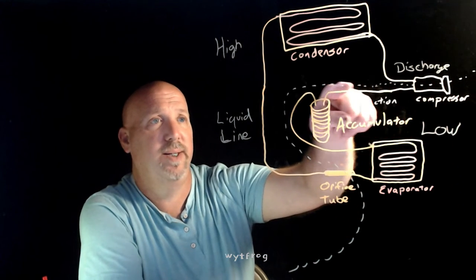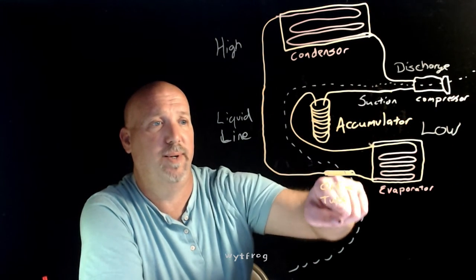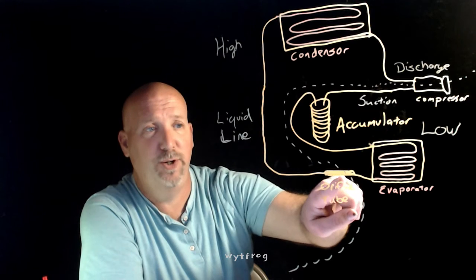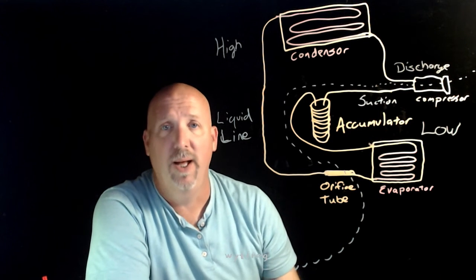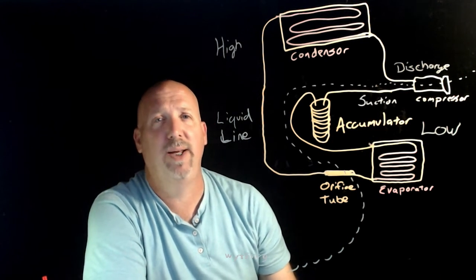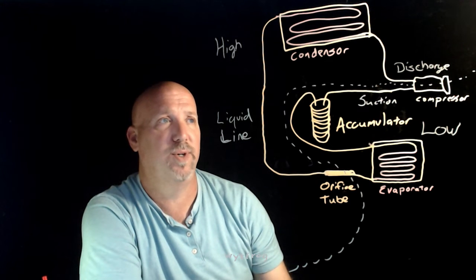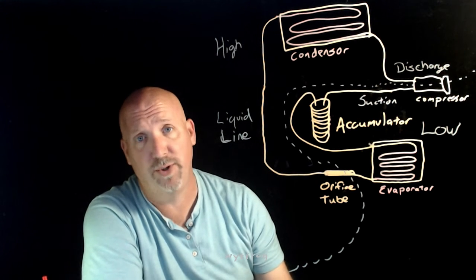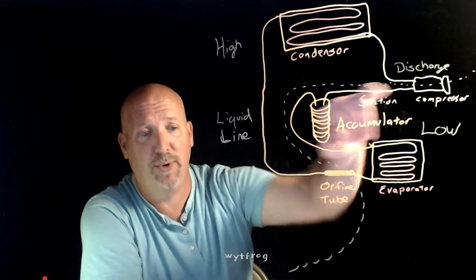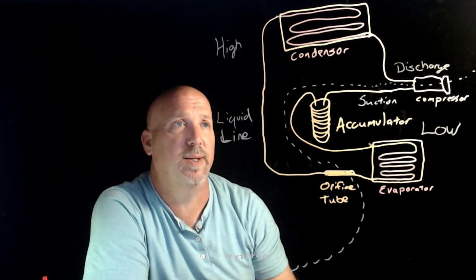This line right here denotes the high side and the low side of the system. So, the orifice tube is a split point and the compressor is a split point. When I say split point, I mean that's where the refrigerant changes from a high pressure to a low pressure or from a low pressure to a high pressure. Just be aware of the split points in the system.